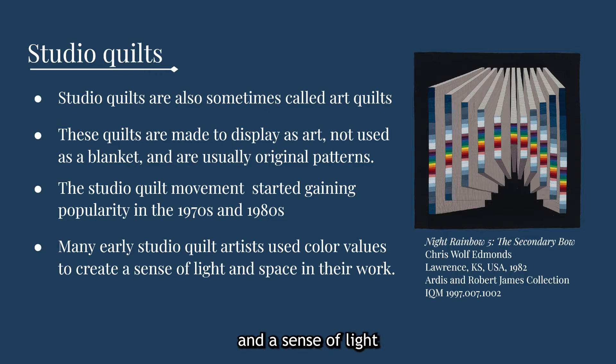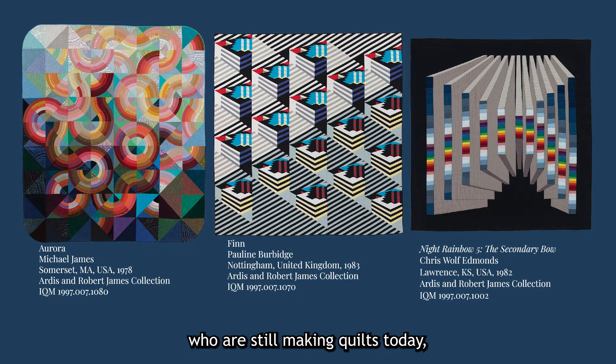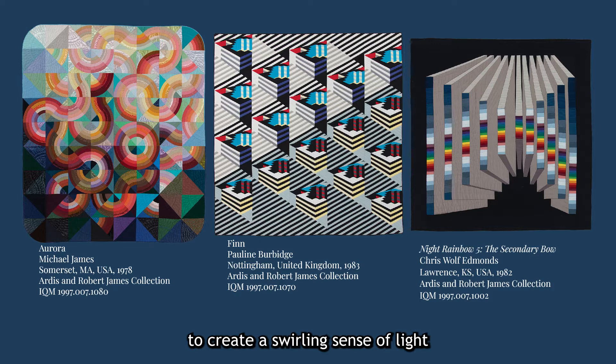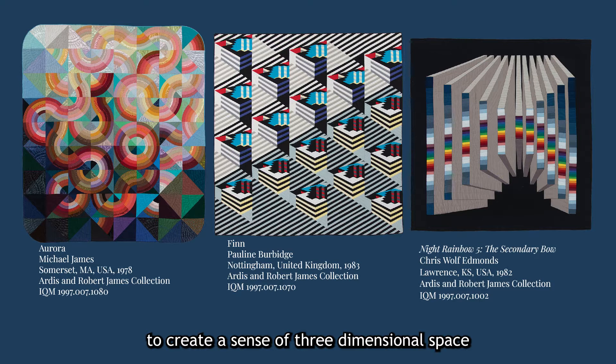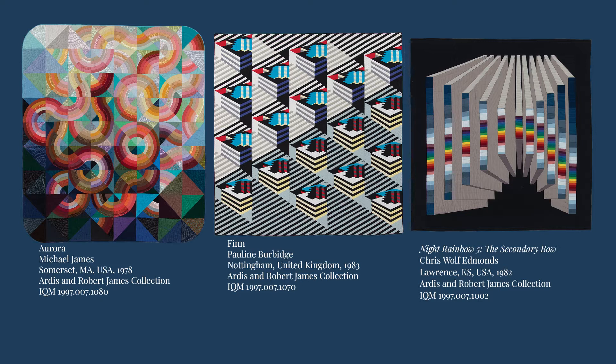These quilts, created by artists who are still making quilts today, show some of the ways color value can be used to trick the eye. Michael James in Aurora used a shift in lighter and darker shades to create a swirling sense of light and shadow. Pauline Burbage and Chris Wolfe-Edmonds used a combination of shape, line, and color value to create a sense of three-dimensional space in their quilts, Finn and Night Rainbow No. 5, the secondary bow. Both of these quilts use color value in a similar way to the traditional tumbling blocks pattern to create a sense of a top, a bottom, and a side of a 3D shape.